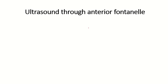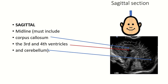Ultrasound through the anterior fontanelle: when the probe is placed along the sagittal suture, the midline structures of the brain can be visualized — the medial surface of the cerebrum, corpus callosum, third ventricle, fourth ventricle, and the cerebrum showing the sulci and gyri.